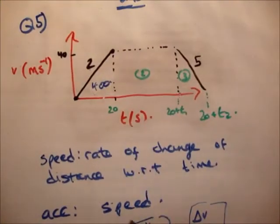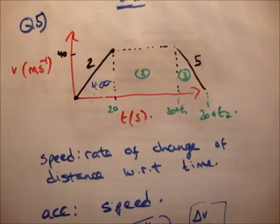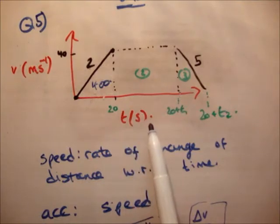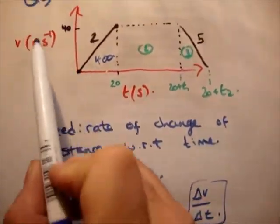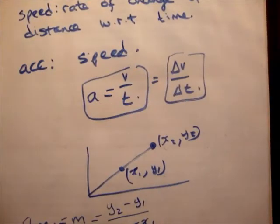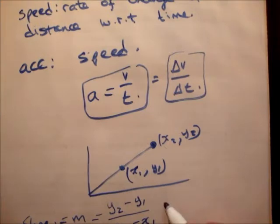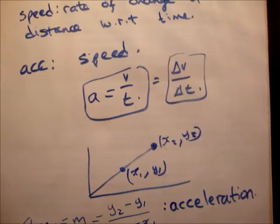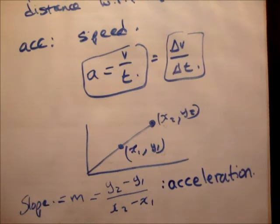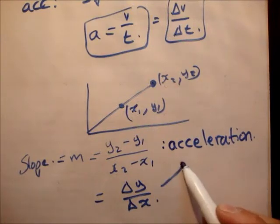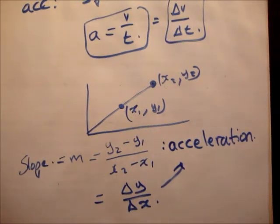Now if you're doing a maths course, everything is graphed. We're plotting t and v. So the rate of change of y, which is speed, with respect to x, which is time, is equal to the slope. So the rate of change of speed with respect to time is the slope of this graph. And in the case of a velocity-time graph, the slope is equal to the acceleration. Delta y over delta x is a slope, and that's also equal to an acceleration.